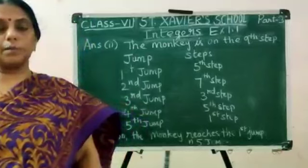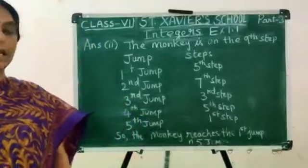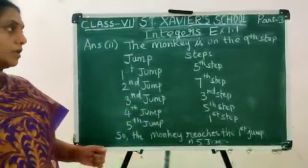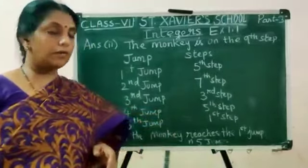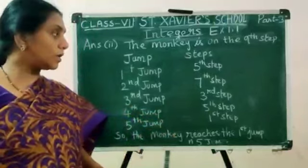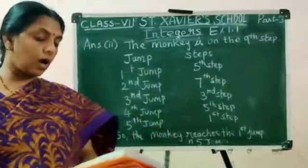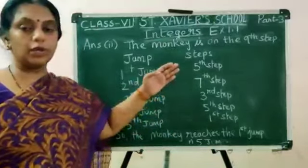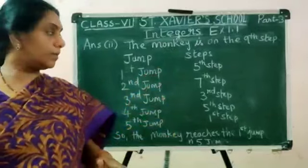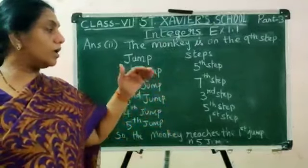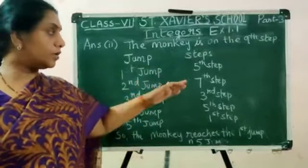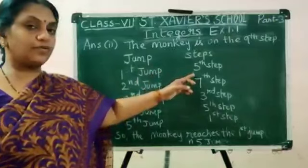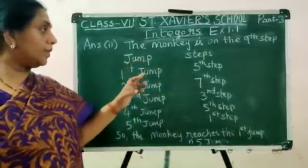Now the answer for this: the monkey is on the 9th step. The condition is 4 steps up it will go and 2 steps it will go down. So in the 1st jump, from the 9th step, it goes 4 steps up. So it is 9 minus 4, it will become the 5th step.